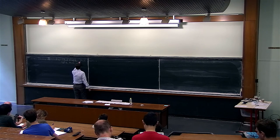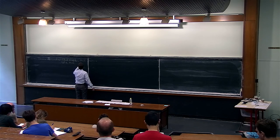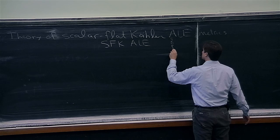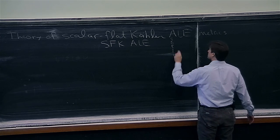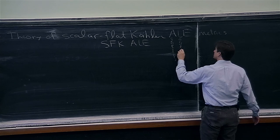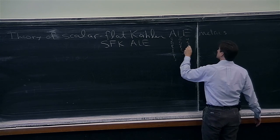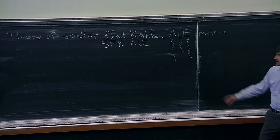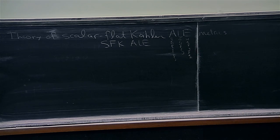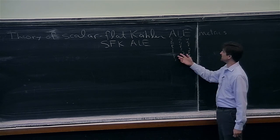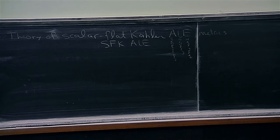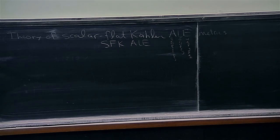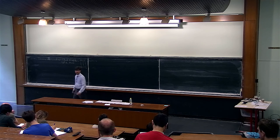ALE stands for asymptotically locally Euclidean. ALE metrics are a generalization of something that played a key role in the Yamabe problem and in general relativity, namely asymptotically flat metrics. It's a slight generalization by allowing a group action at infinity.